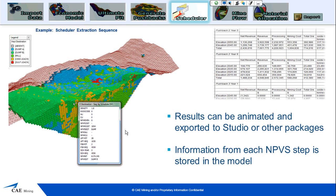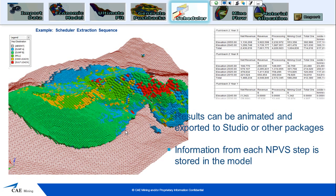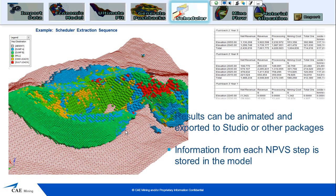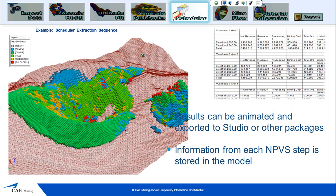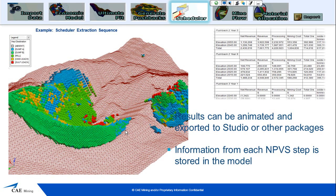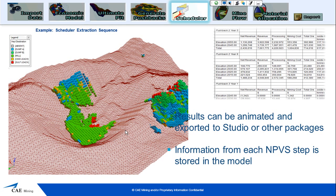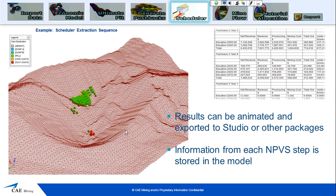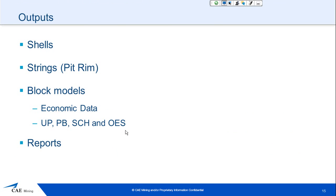Once these reports are generated, we can export the block model to Studio 3 or other packages. The block model has information on the blocks about everything from the imported data — qualities, the economic model values, the ultimate pit Lerch-Grossman shell and the OES, pushback shell and OES, the scheduler period and sequence, and also destinations. Other things we can export are shells, pit rim strings, and our reports.